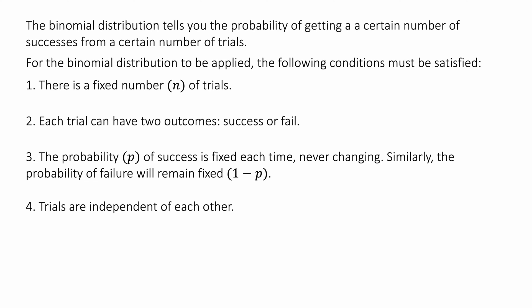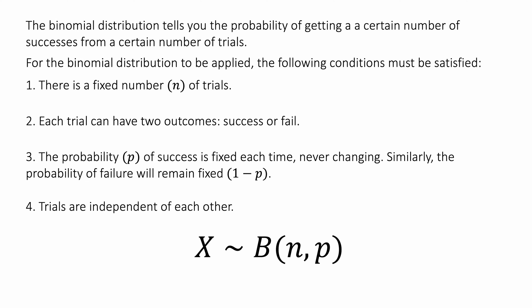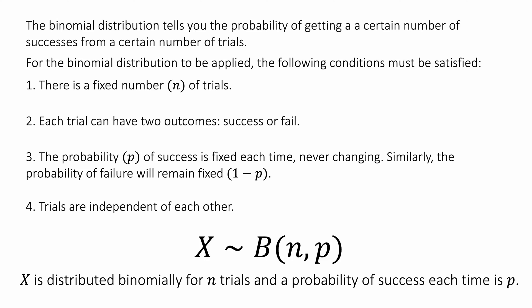If all these conditions are true, then we can say that x is distributed binomially for n trials and probability of success p. This notation at the bottom of the screen is how we write that mathematically — x is distributed binomially for n trials and the probability of success each time is p, where x is the number of successful outcomes. That's probably quite confusing right now; let's see some examples and we can come back to what this means later on.